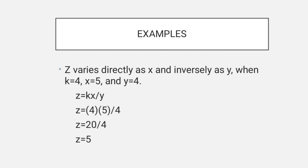Example: Z varies directly as X and inversely as Y. When K is 4, X is 5, and Y is 4, find Z. Using Z equals K times X over Y, substitute: Z equals 4 times 5 over 4. So 4 times 5 is 20, and 20 divided by 4 is 5. So Z is 5.